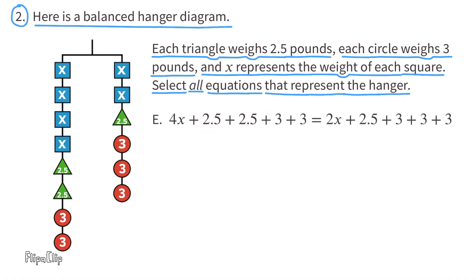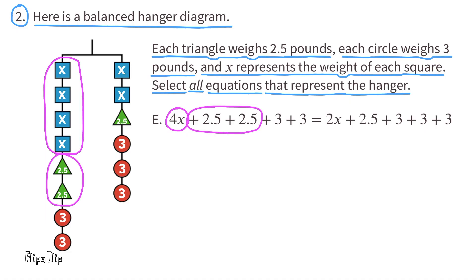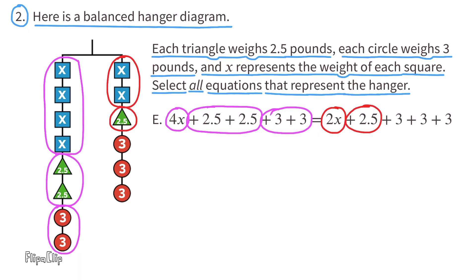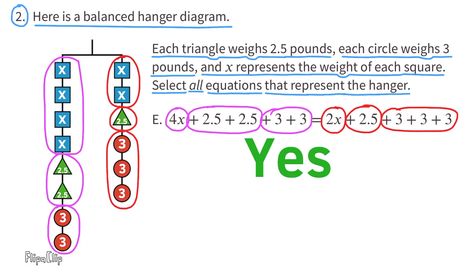Equation E: Here's 4x, plus 2.5 + 2.5 for the two triangles on the left, plus 3 + 3 for the two red circles on the left. On the right side of the equal sign: 2x + 2.5 + 3 + 3 + 3. Yes, this equation matches the hanger.